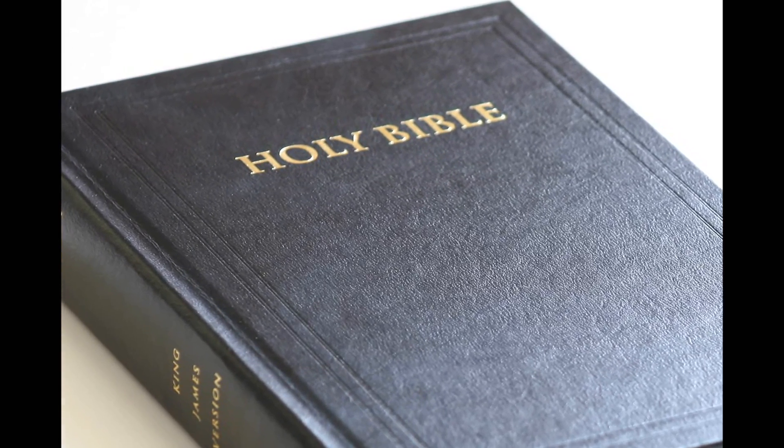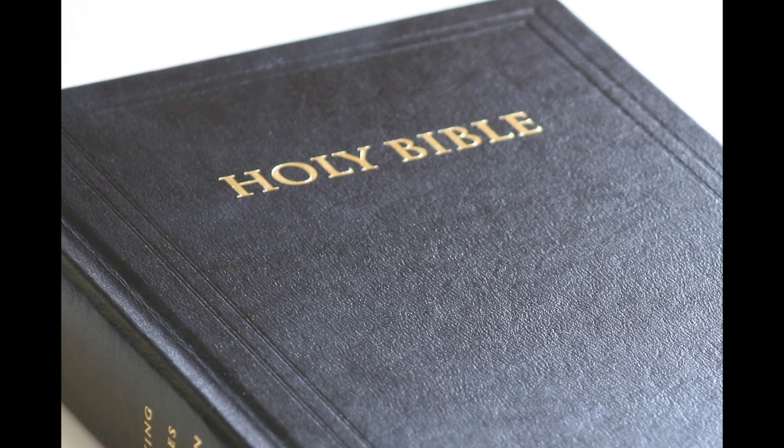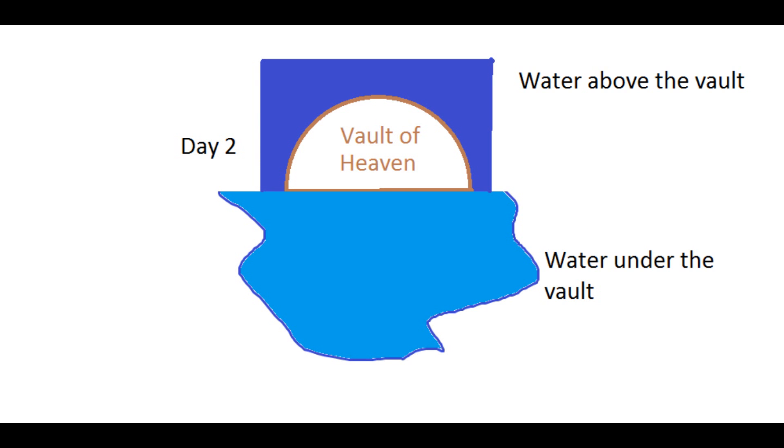There is another awkward thing about the Genesis 1 account of creation that is almost always overlooked. Genesis 1 actually tells us where the sun, moon, and stars are located. On the first day, God created the earth as a formless mass of liquid water. Then, on the second day, God created a vault, which we call the sky, that divides the mass of water into two separate bodies.